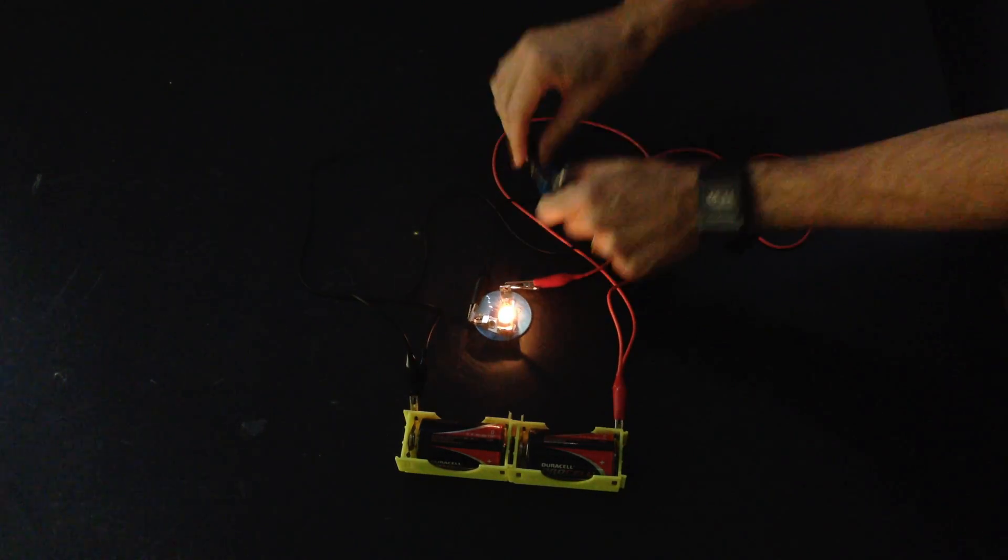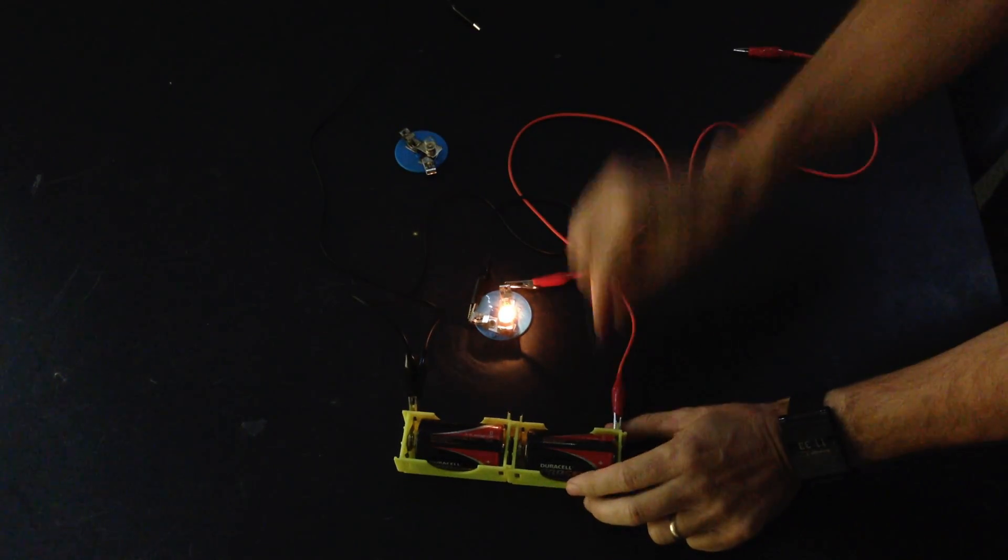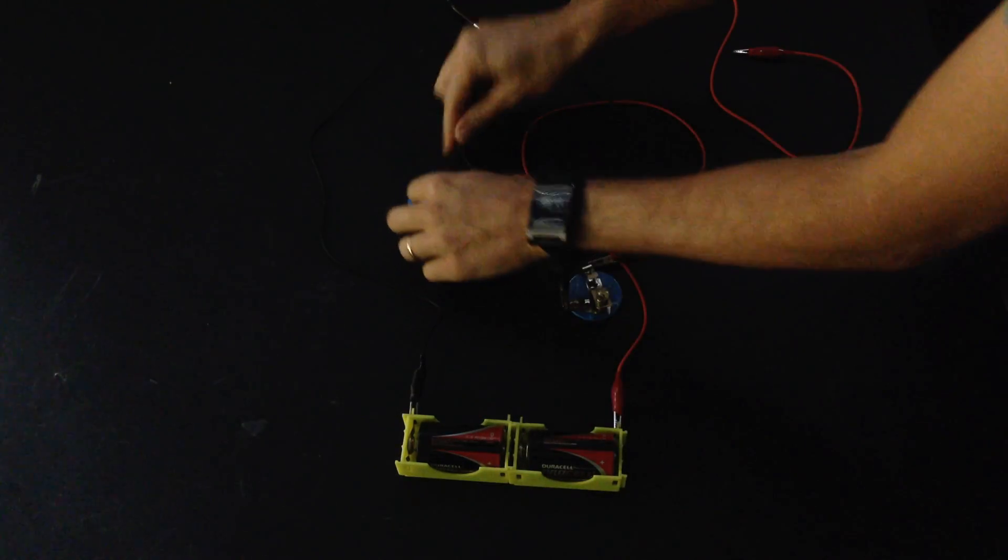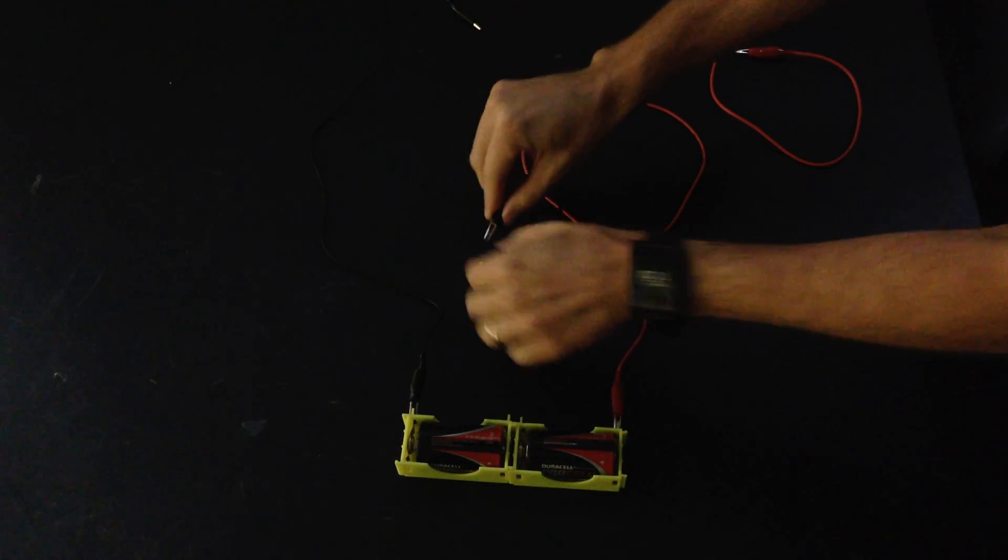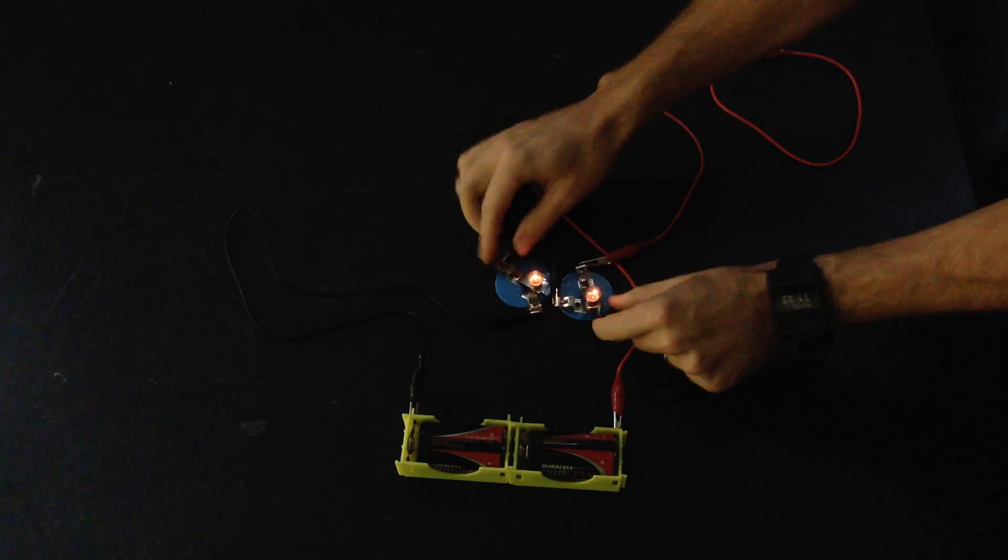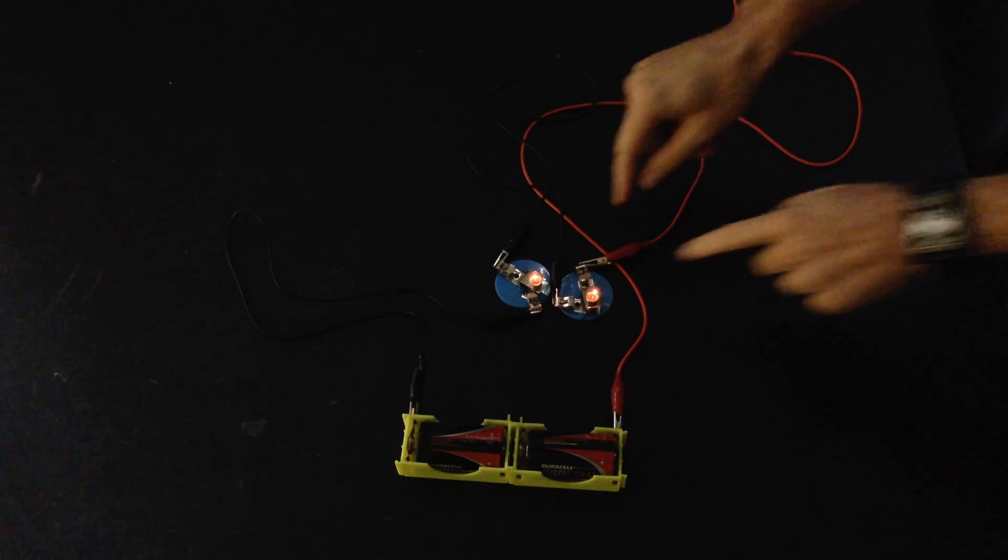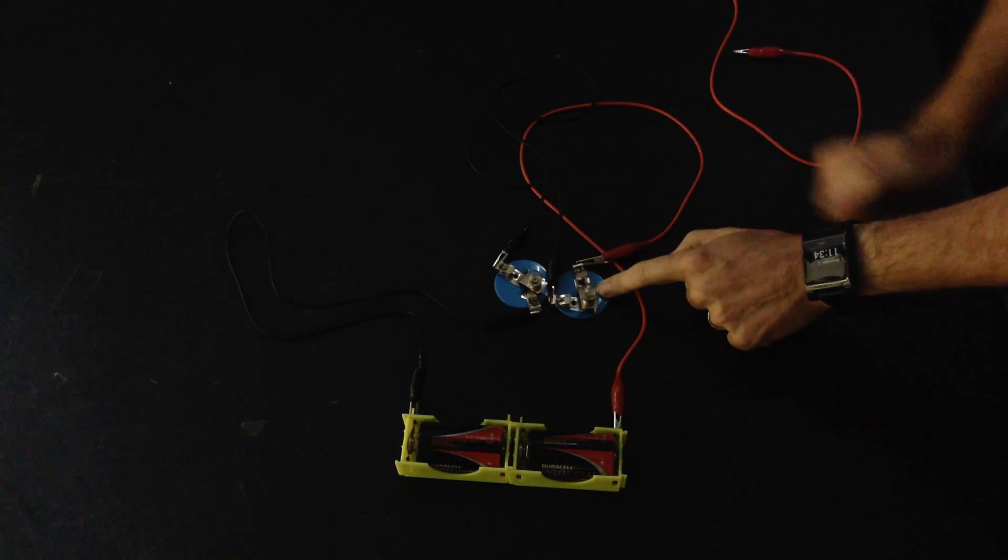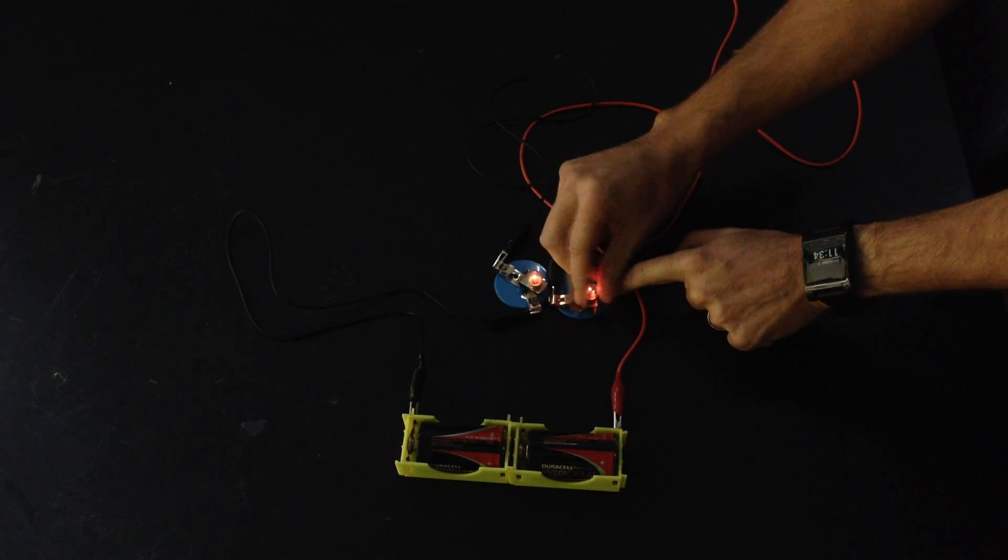Now I'm going to hook them up in series. Now one thing you'll notice is that I actually have to take apart the circuit all the way in order to get it to work with series, because I need to add another one in the line between one battery and the other. So now you can see both the light bulbs are on. I'm going to unscrew one of them, and they both go out. So that's series.